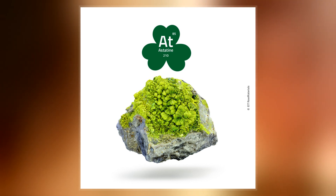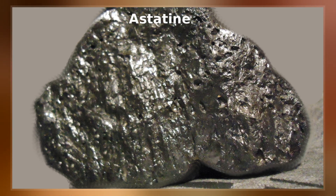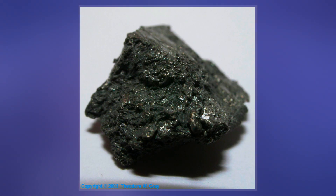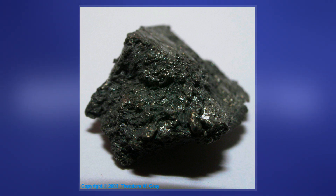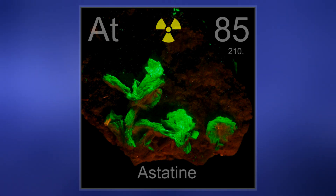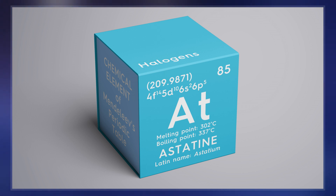The bulk properties of astatine are not known with certainty. Many of them have been estimated based on the element's position on the periodic table as a heavier analog of iodine and a member of the halogens. Astatine is likely to have a dark or lustrous appearance and may be a semiconductor or possibly a metal. It probably has a higher melting point than that of iodine.